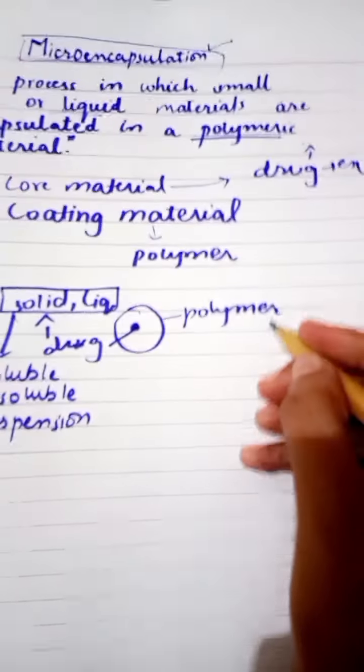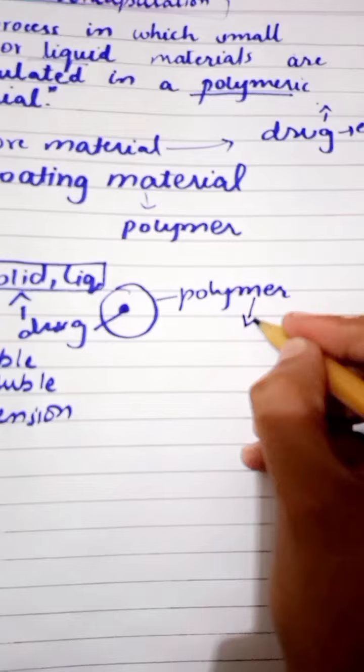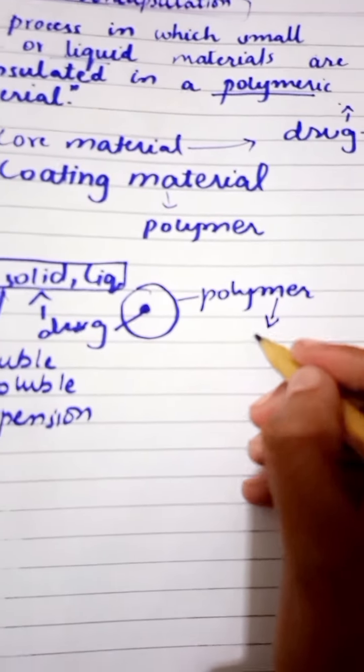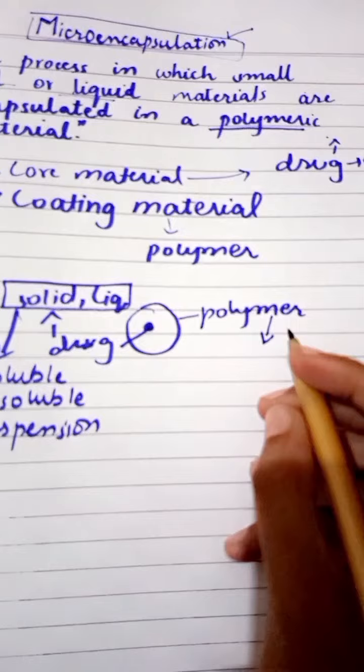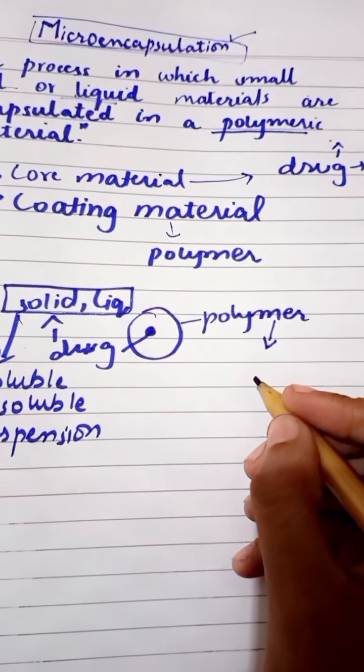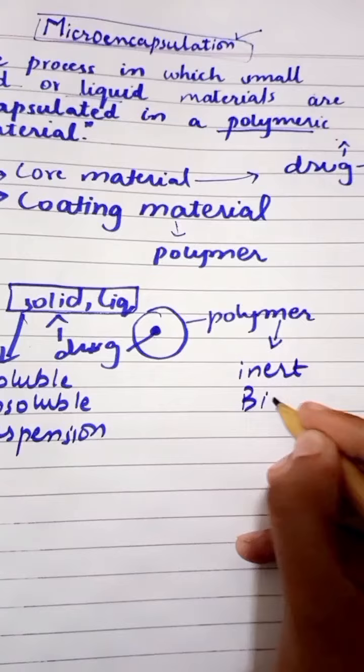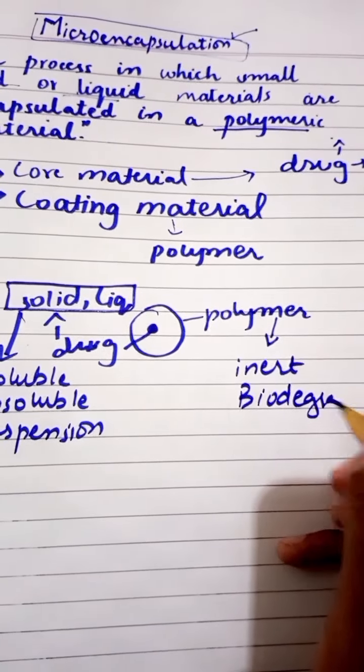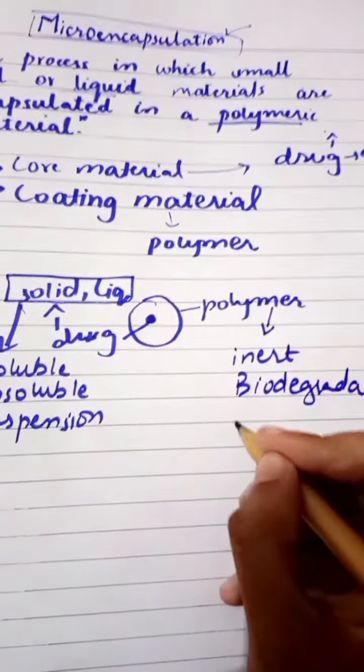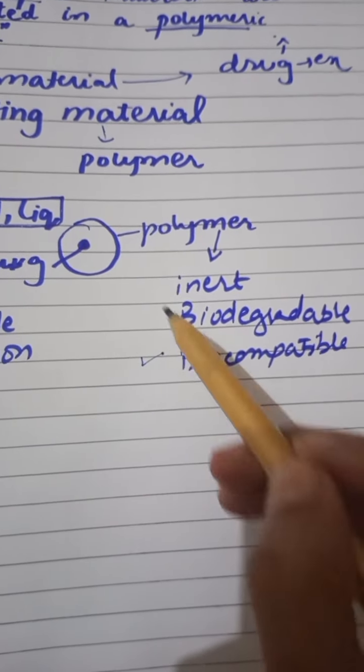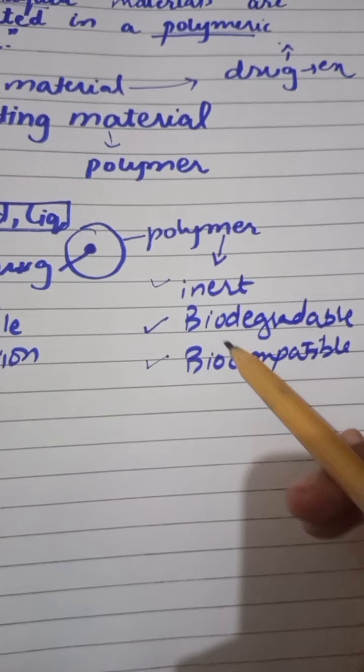The other material which is here in this technology is the polymer and this polymer must have three main properties. These are it must be inert, it must be biodegradable, and it must be biocompatible.